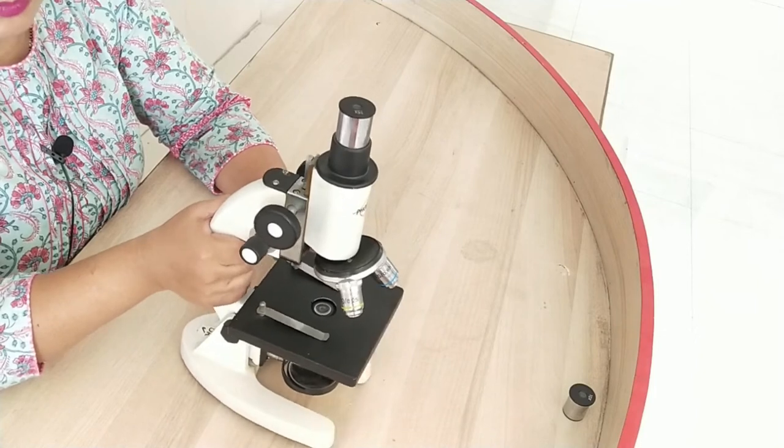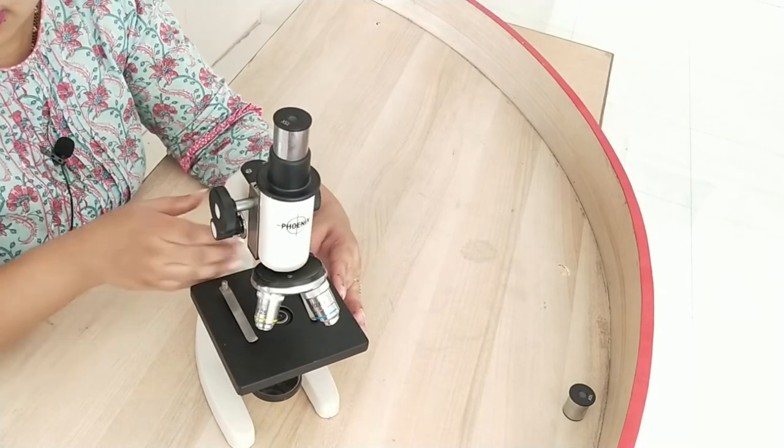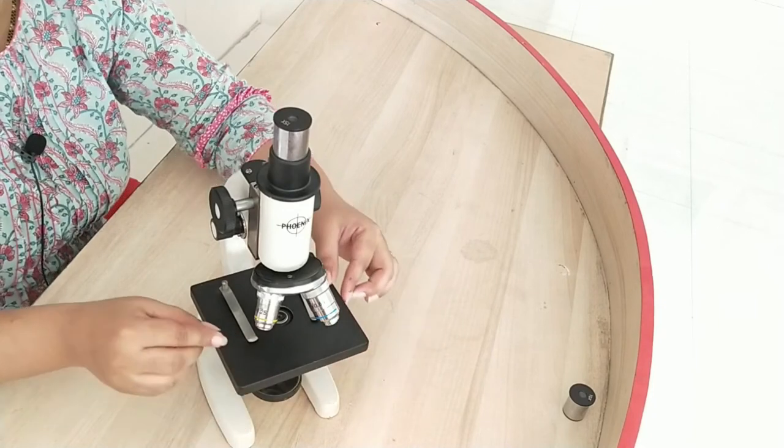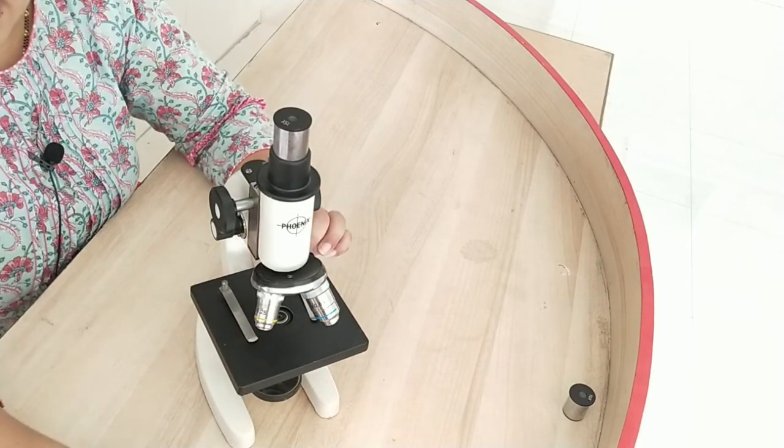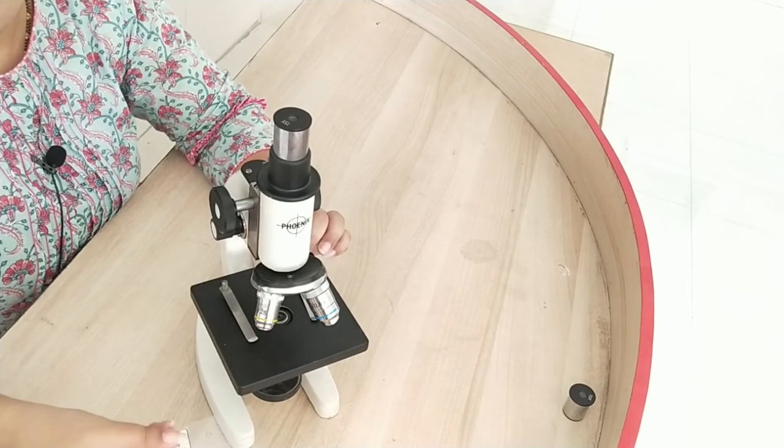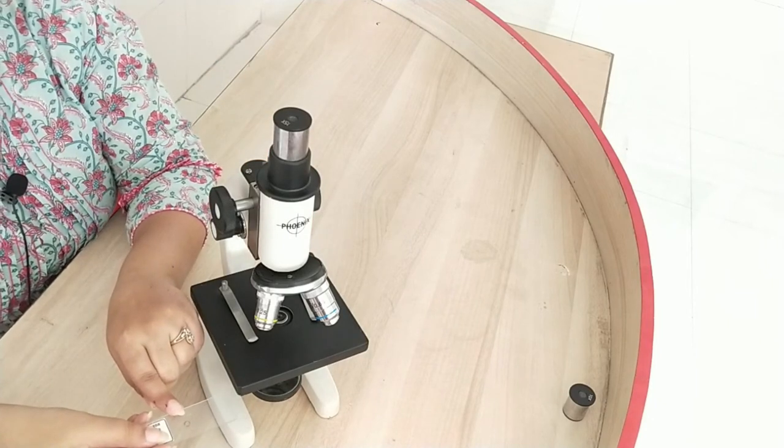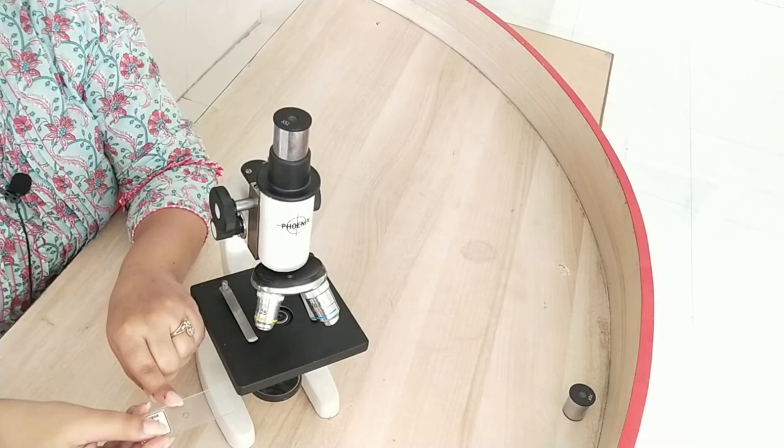Next we have stage. Here you can see it is a flat rectangular plate and this is a permanent slide which contains the cells or microorganisms that we need to study. We keep this slide on the stage.